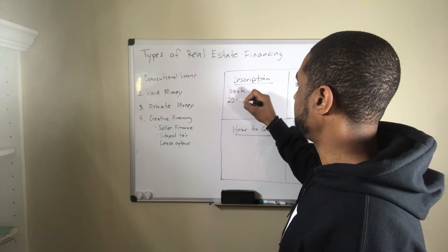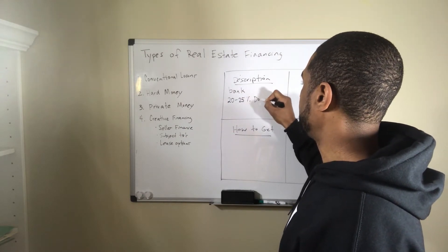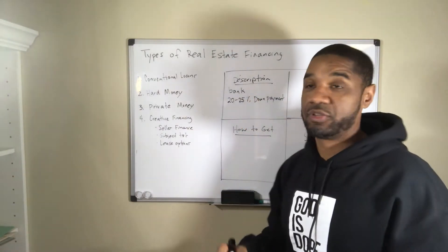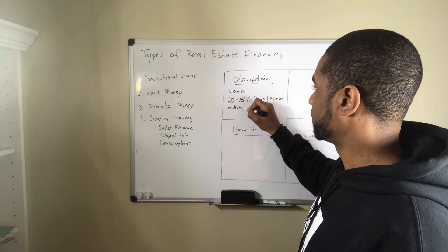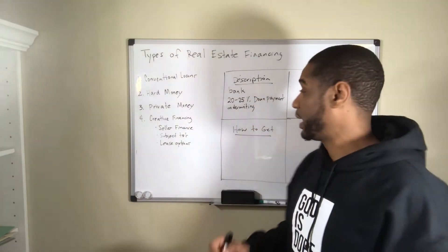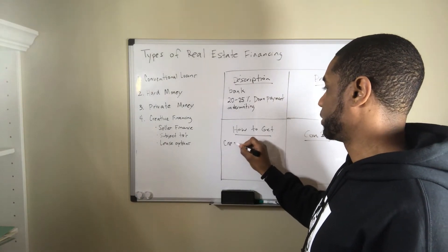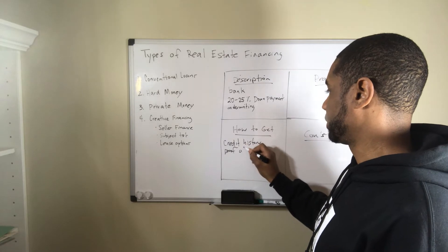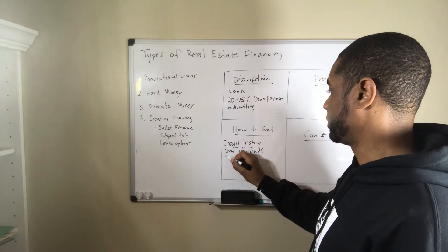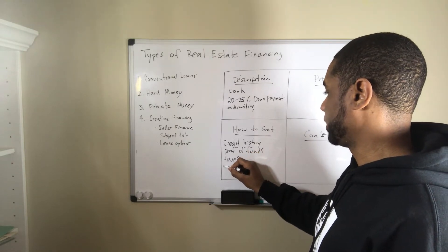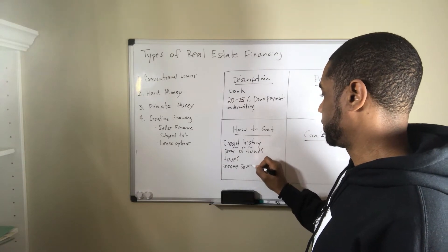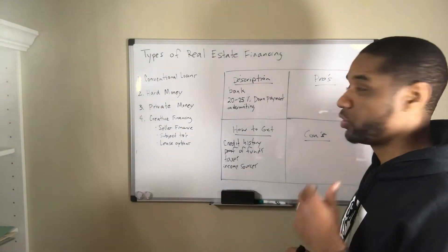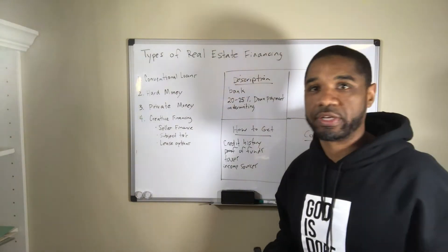With a conventional loan you're typically going to put down a 20 to 25 percent down payment. You go through underwriting — you have to prove your credit history, proof of funds, taxes, income sources — basically whatever the bank wants. They want to prove your creditworthiness and that you are not a risk if they're going to give you money.